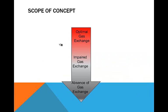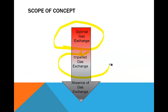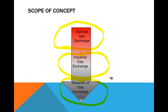Within the scope you have optimal gas exchange, which can proceed to impaired gas exchange if you have an acute or chronic disease process, and the absence of gas exchange which occurs at death.